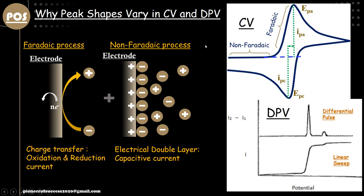Hello viewers, welcome to Pioneer of Success. We are conducting a series on cyclic voltammetry and differential pulse voltammetry. We already uploaded a few fundamental videos on CV and DPV and received a huge response. In today's video, we are going to talk about different characteristic peaks as we obtain from CV and DPV — why a peak becomes broader and another becomes sharp. The fundamental reasons and equations will all be discussed today.